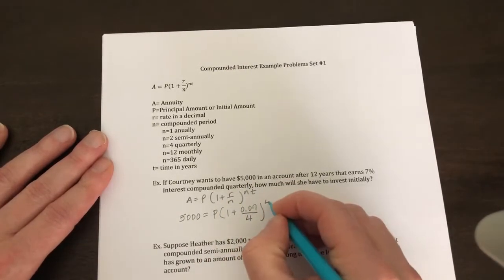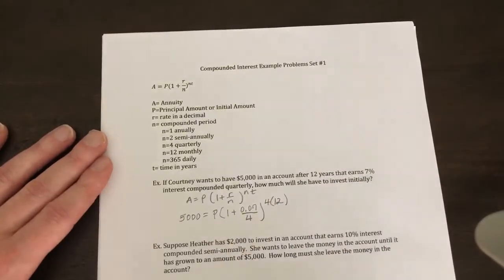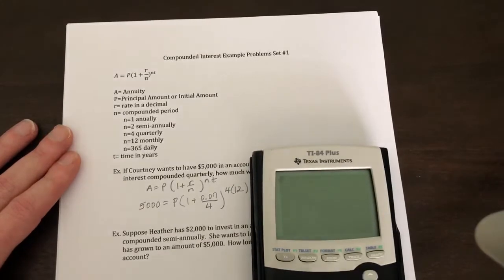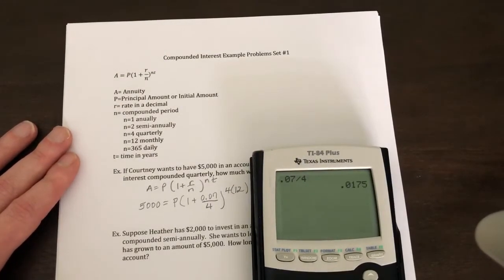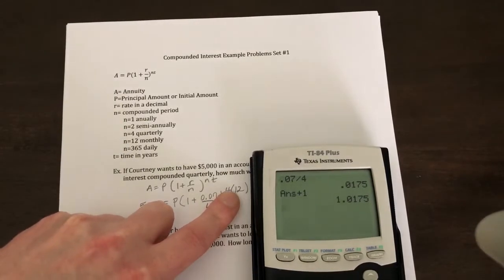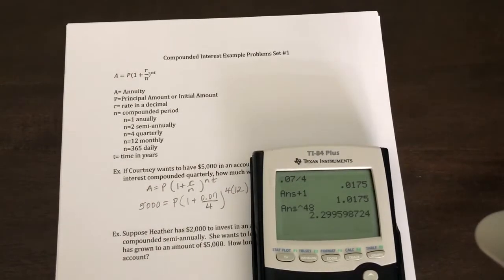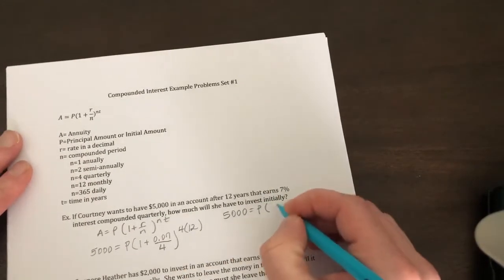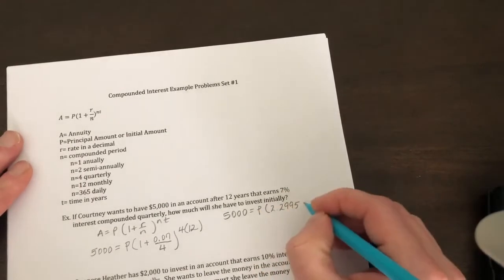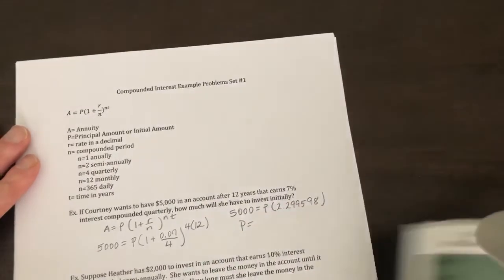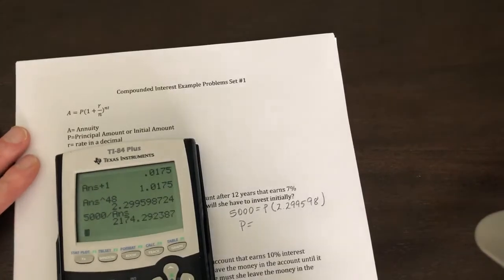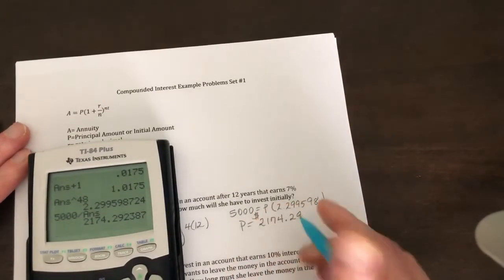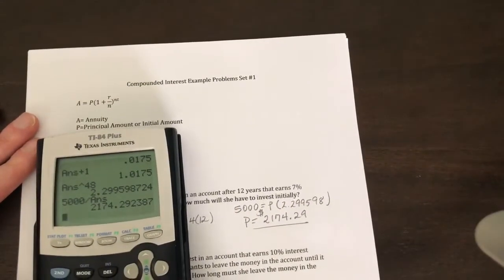So what we're going to do is put this in the calculator. We're going to do 0.07 divided by 4 plus 1, and we're going to raise it all to the 4 times 12 power, which is 48. So we get 5,000 = P × 2.299598. If I'm solving for my principal amount, you do 5,000 divided by that, and you should get $2,174.29. Remember, money you go two decimal places.